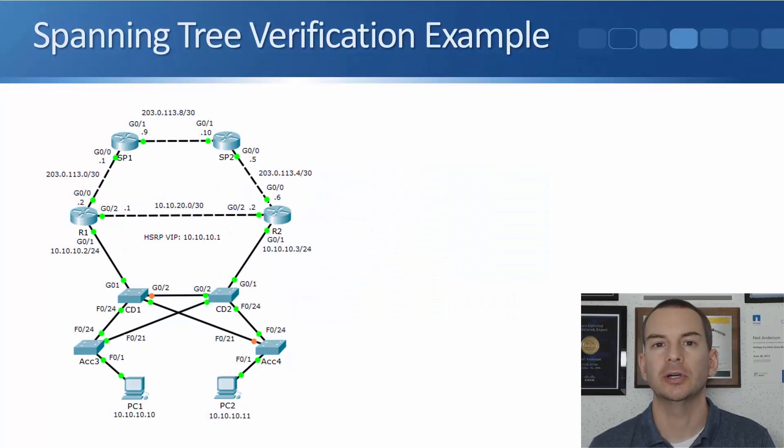In this lecture, you'll learn how to verify the spanning tree protocol. I'm using the same network topology that I've been using throughout the rest of the section. We've got the layer 3 part of the network up at the top with our routers R1 and R2 going northbound. And then we've got the layer 2 part of the network with our core distribution switches CD1 and CD2 and our access layer switches, access 3 and access 4.